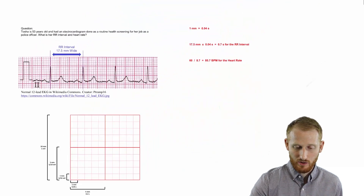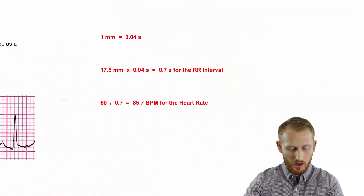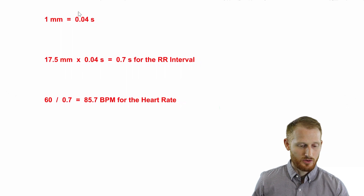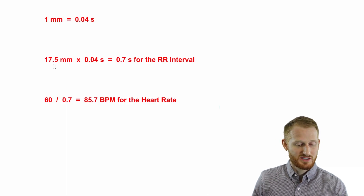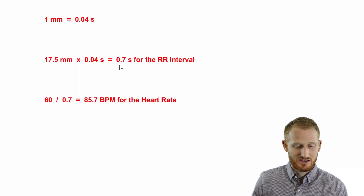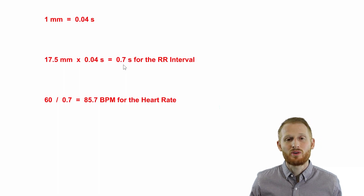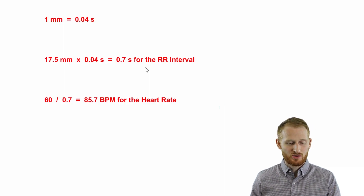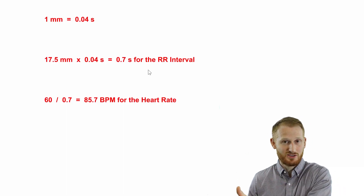Getting back to our question: we now know that one millimeter equals 0.04 seconds. Her R-to-R interval was 17.5 millimeters long. So all we need to do is multiply 17.5 times 0.04 seconds, and we end up with 0.7 seconds as her R-to-R interval. In other words, it took 0.7 seconds for a heartbeat to start and then for the next one to start.